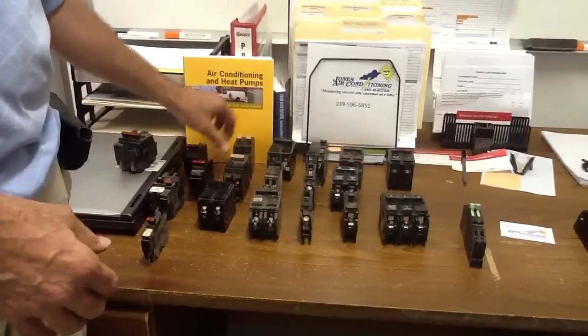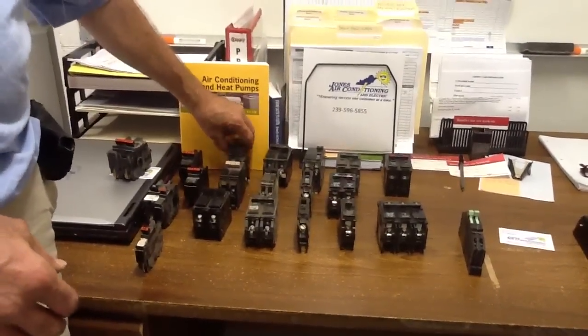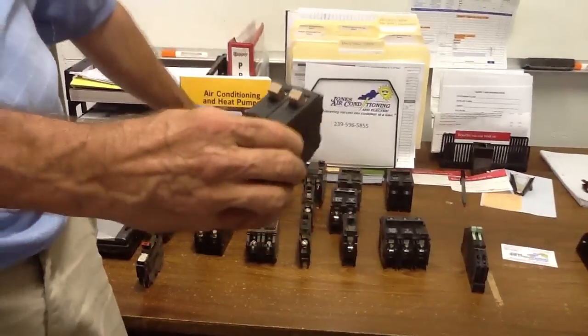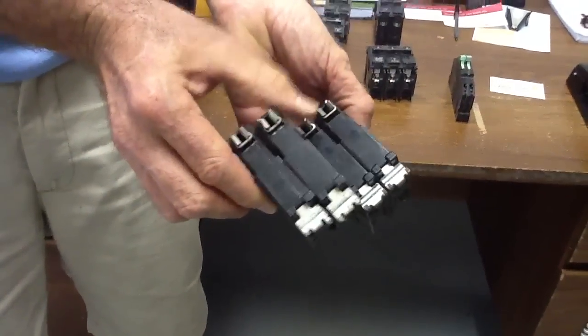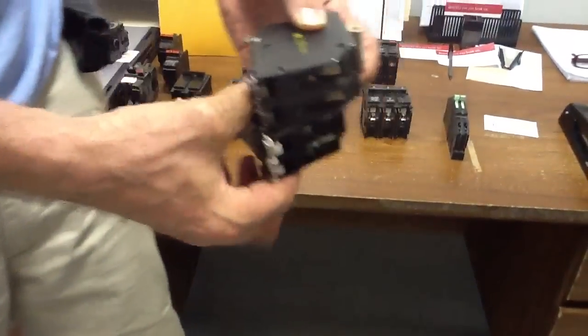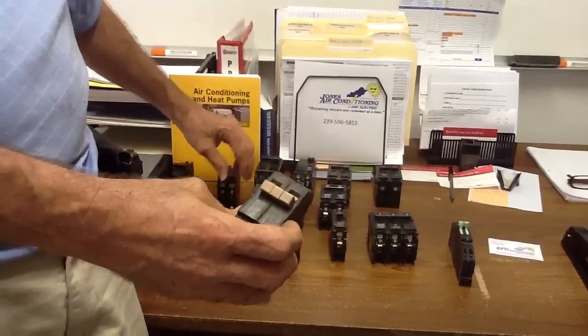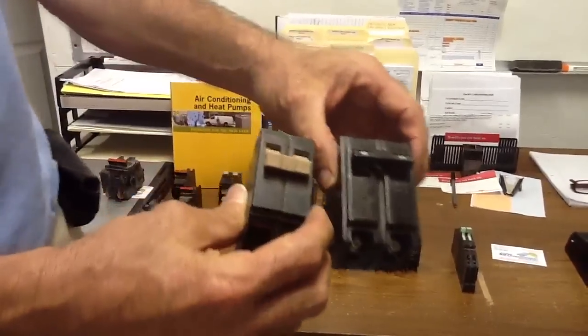Moving along here, we're going to talk about Cutler Hammer next. This is a tan Cutler Hammer, double pole. The footprint is such. They work pretty well. The thing you've got to remember about Cutler Hammer, there's the tan, and there's the black Cutler Hammer, and the footprint is entirely different.